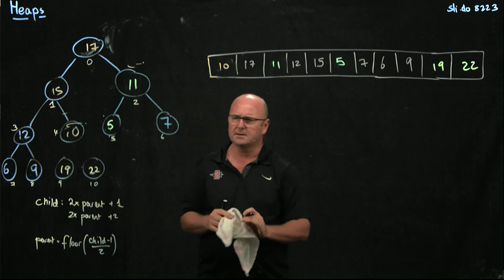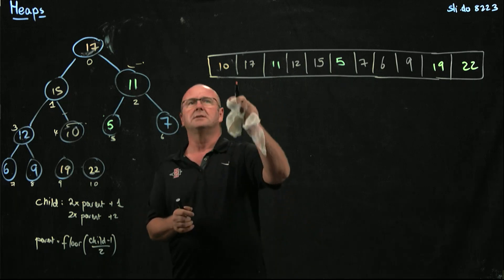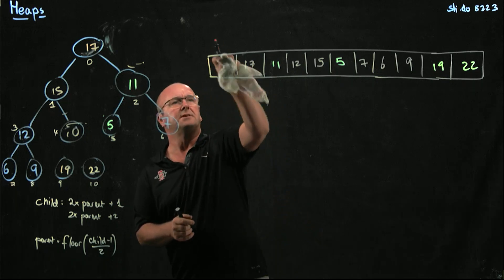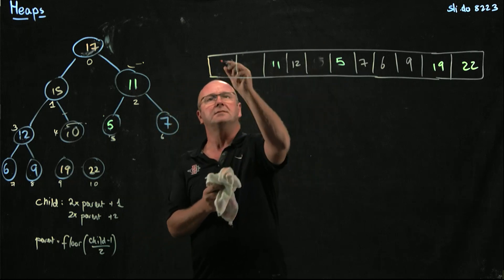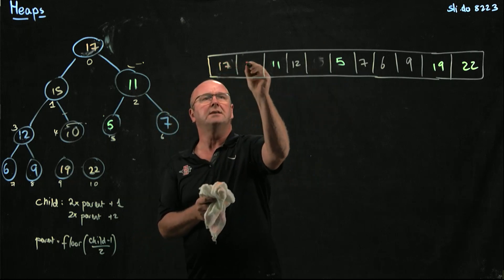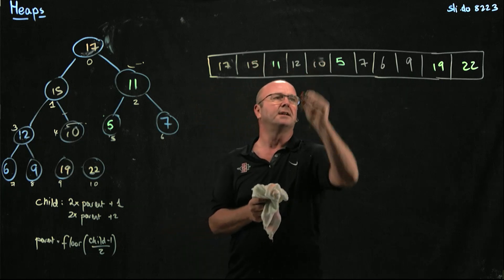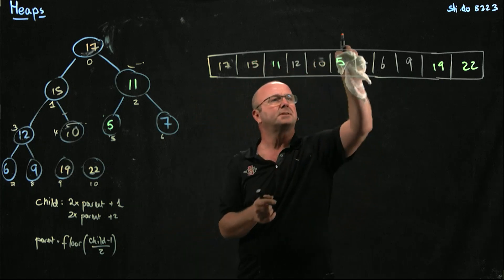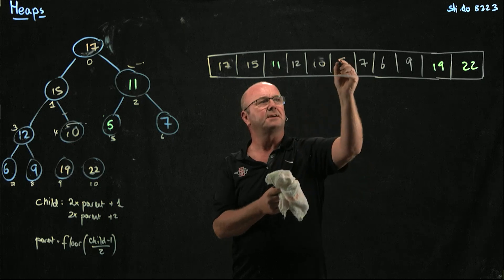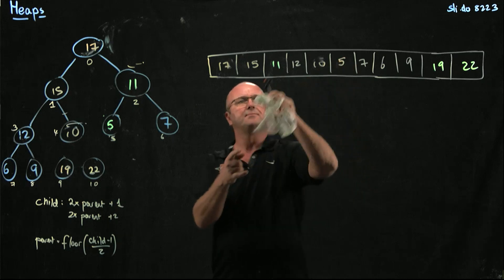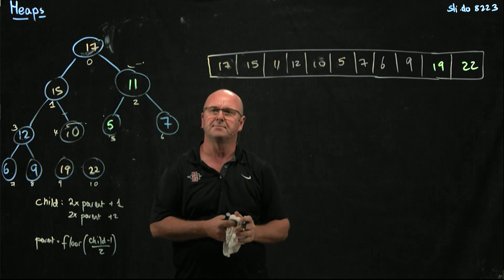Everybody happy with that? Not too much magic. So we've got 17, 15, and 10. I'm just going to change the color on my 5 so we don't get confused — 11 — so we don't get confused.